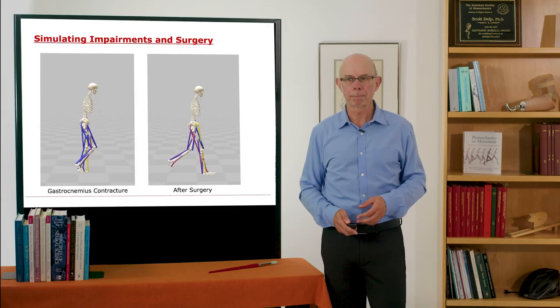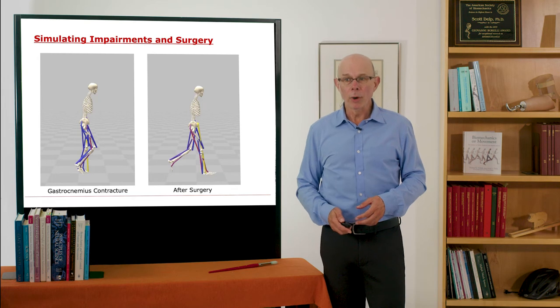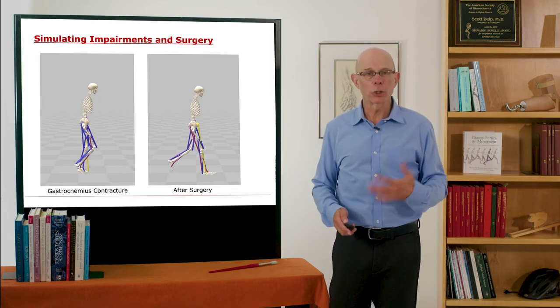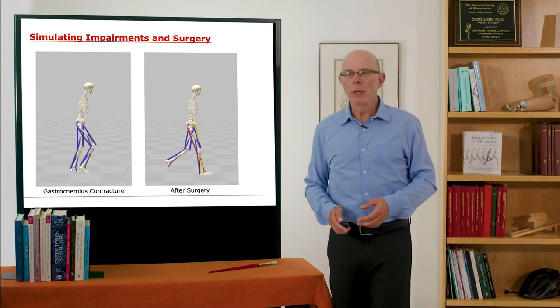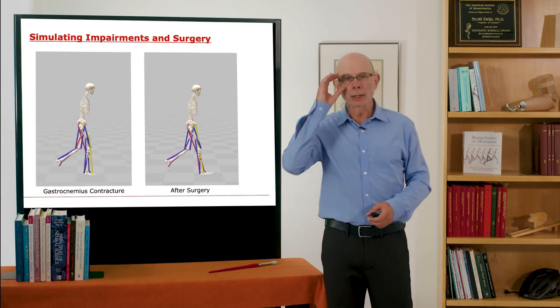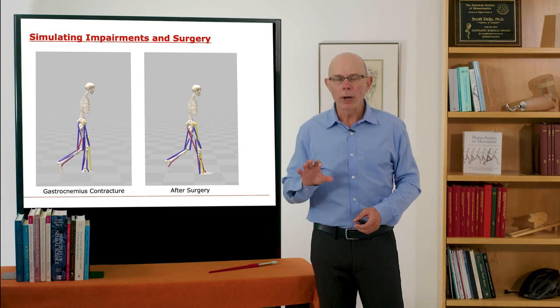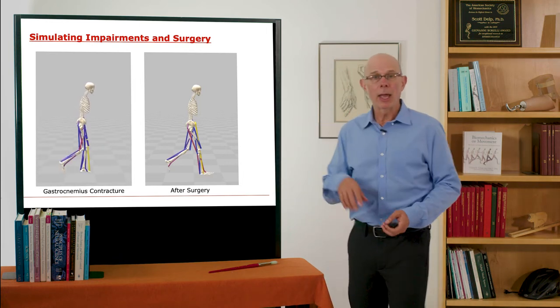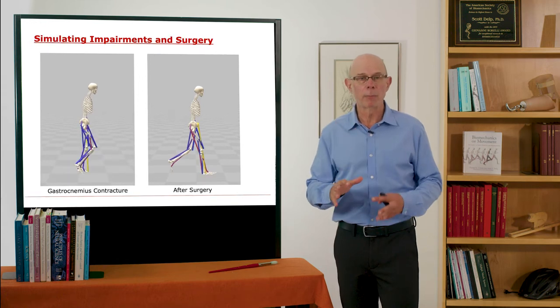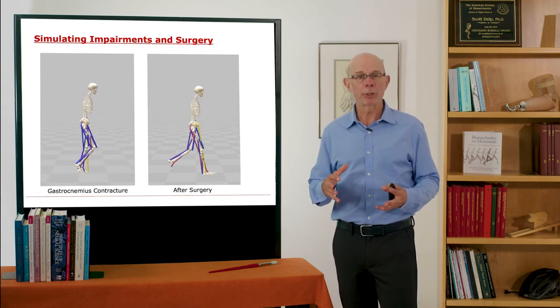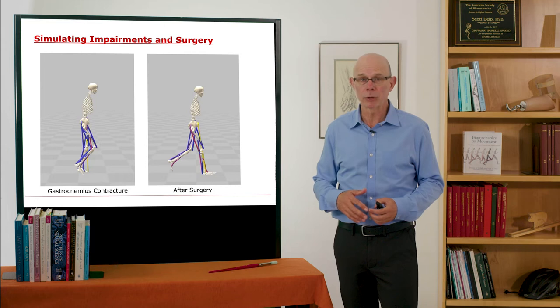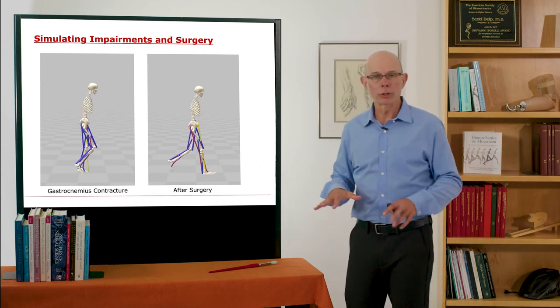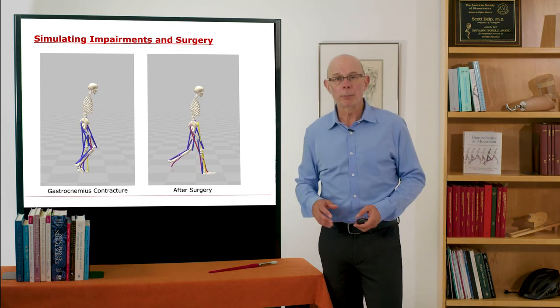One of the things you can do is simulate impairments and surgery. For example, this first simulation was done by Carmichael Ung, where the gastrocnemius—remember, the big muscle in the back of the calf—has shortened muscle fibers. It's called muscle contracture. It happens in cerebral palsy, for example, and other conditions. And you can see because of that, there's walking up on the toes. We can then go into the model and we can lengthen that muscle.